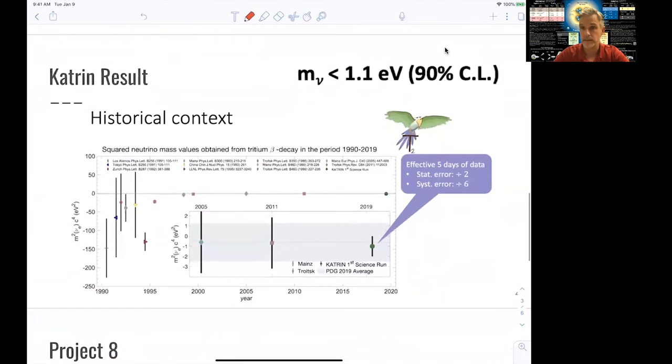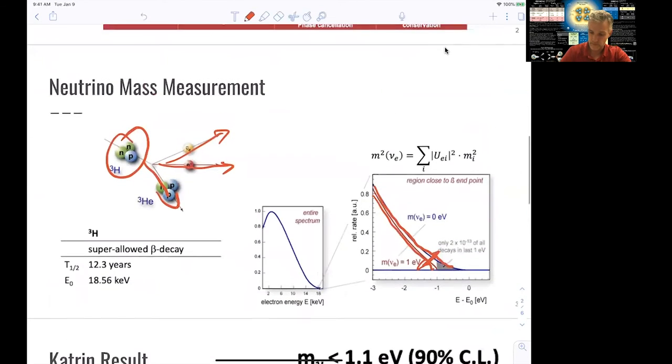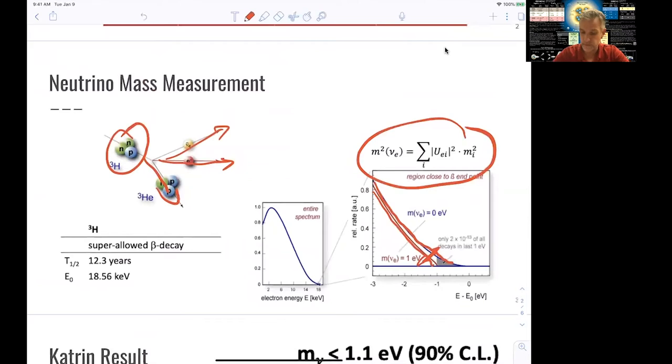And so the latest results came out last year from the Katrin experiment and shows that we can set an upper limit. The result is consistent with a neutrino mass of zero, and we can set an upper limit at 90% confidence level that the neutrino, the electron neutrino, is of mass of 1.1 electron-volt. Just as a reminder, we measure the mass of the electron neutrino in this decay, which is the sum of the individual components, mass eigenstates, which make up the electron neutrino.